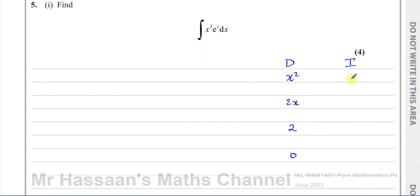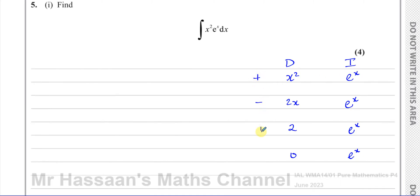When you get to zero we stop. For the integration column we take e to the power of x — e to the power of x won't change, it stays as e to the power of x all the way down. We don't put a plus c here. We keep writing e to the power of x until we get to the zero, and we write the alternating signs: plus, minus, plus, minus.